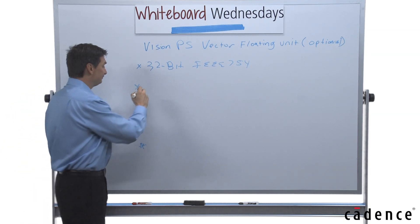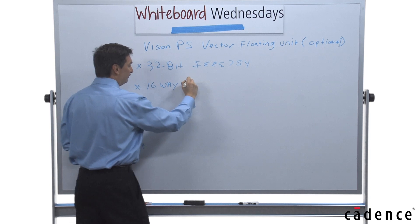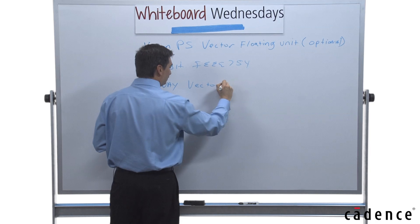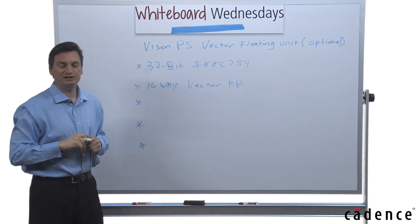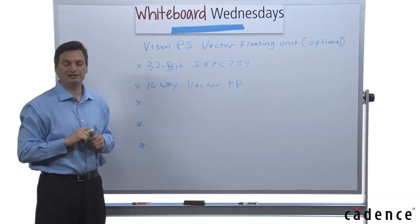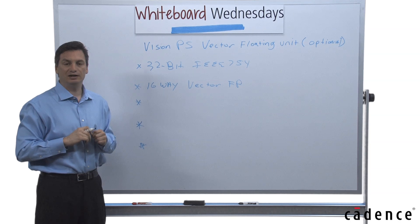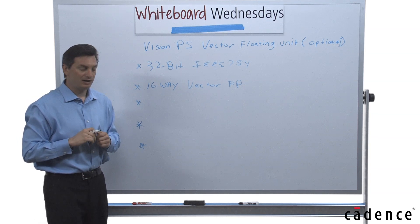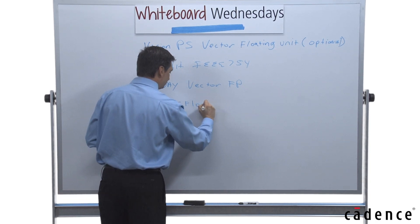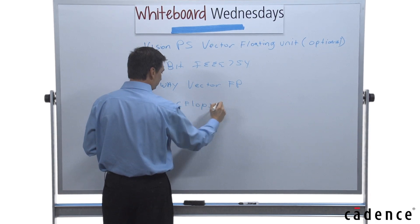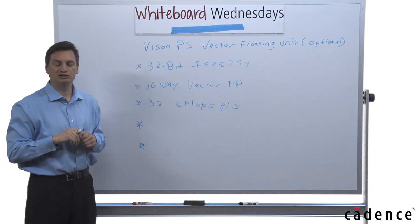Let's talk about some performance. So 16-way vector floating point. This allows us to do 16 simultaneous instructions and data at the same time, giving you huge performance and parallelism in the floating point unit. And that translates into 32 gigaflops per second performance. So it's about equivalent to a GPU.